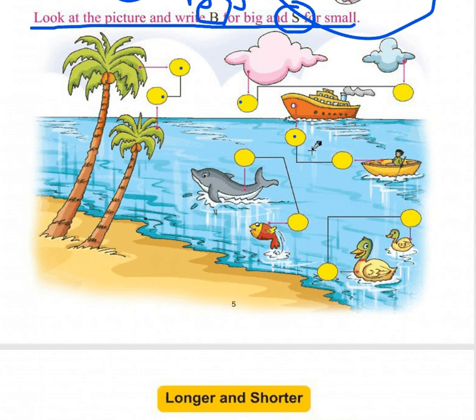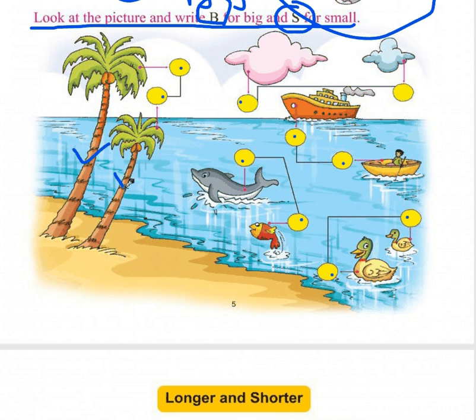Jo bhi yellow circle diya hai, in mein hume likhna hai. Now come to the picture — can you see these two coconut trees? Which one is big? This one is big — yeh bada hai. So we write B in its circle.